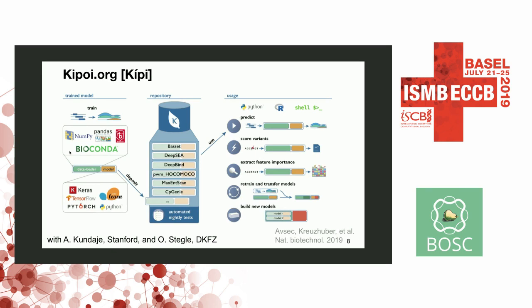This is our proposition for the field of omics, called KIPI — a Greek word which means garden. It's a collaboration between my lab, the lab of Anshul Kundaji, and Oliver Stegle, and hopefully more groups in the future. I'm going to guide you through this overview figure covering the contributor point of view, the repository point of view, and the user point of view. I'd also like to thank the journal Nature Biotechnology for making this paper open access.